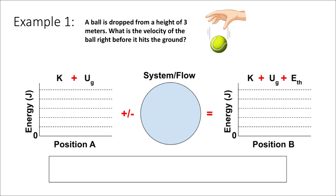To begin, I will complete my LOL diagram. The first thing I'll do is ask myself at position A, and let's say that position A is right after you've dropped the ball. So it's just left your hand, but it's pretty much still at that height of three meters. It hasn't really started moving yet. It's just about to fall. So what would the forms of energy be that the ball has at that position?